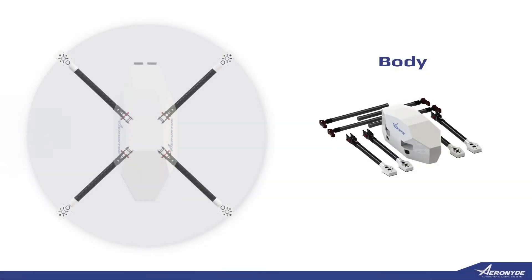The body is made up of the frame, booms, mounts, landing gear, and canopy. It's essentially what holds all the components together and protects the electronics.